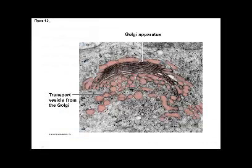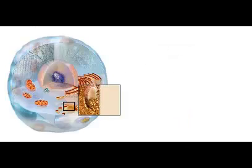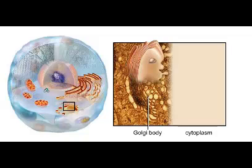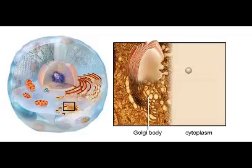Vesicles move to the Golgi apparatus, which is a stack of flattened membrane sacs. The vesicles fuse onto one side of the stack and release their contents into the Golgi. Polypeptides move through the flattened sacs of the Golgi, where they are further modified and prepared for transport out of the cell. Vesicles budding off of the Golgi carry the polypeptide to the plasma membrane and fuse with it, releasing the polypeptide out of the cell.